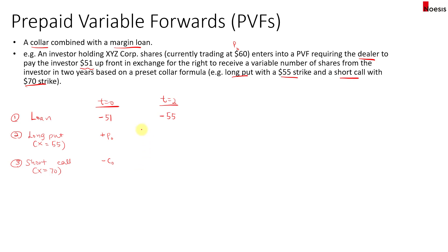When you hold a long put, the payoff at maturity is max(0, strike minus share price). For the short call, the payoff is negative max(0, share price minus the strike of $70).